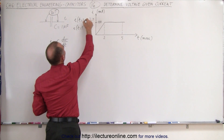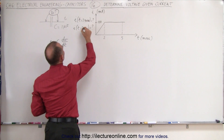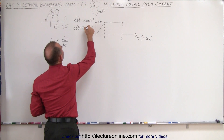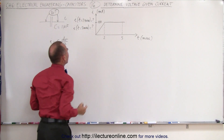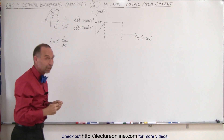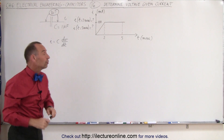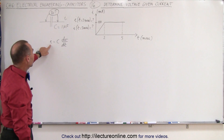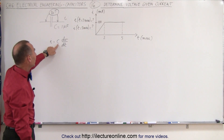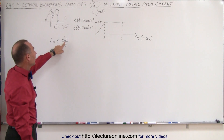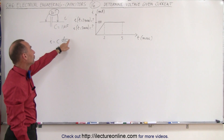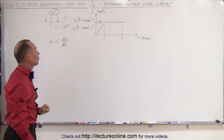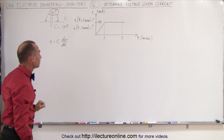So what is the voltage after 2 milliseconds and what is the voltage after 5 milliseconds? We're going to use the equation that the current is equal to the capacitance times the rate of change of the voltage with respect to time.